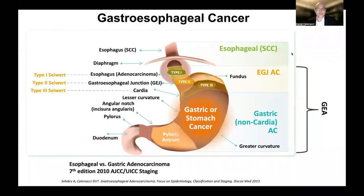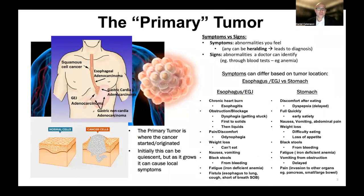In previous videos, we've gone through the different subtypes of gastroesophageal cancer: esophageal squamous cell cancer, esophagogastric junction adenocarcinoma, and gastric non-cardia adenocarcinoma. We talked about the risk factors for each, the global incidence, and the symptoms. We talked about the primary tumor in terms of where the cancer started, from the esophagus down to the stomach, and that many of the symptoms come from that primary tumor, distinguishing between proximal esophageal or GE junction versus stomach locations.